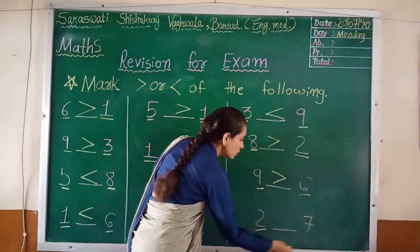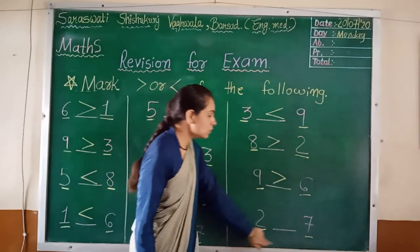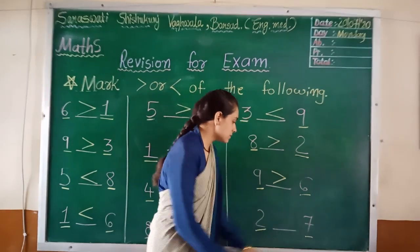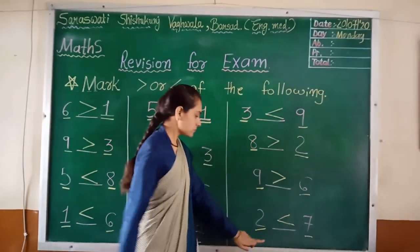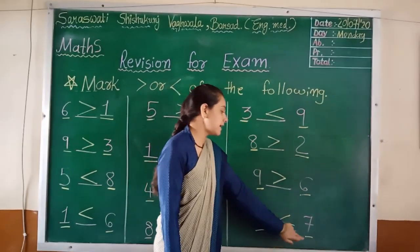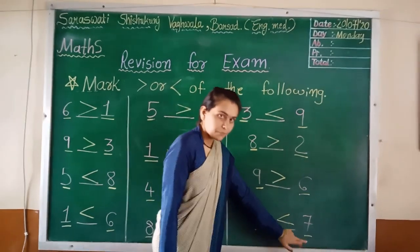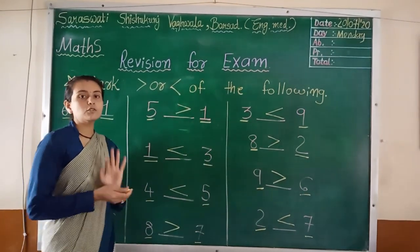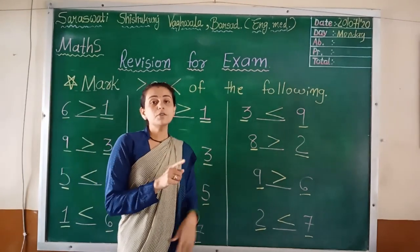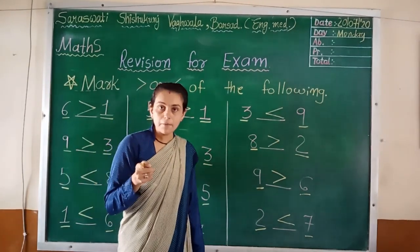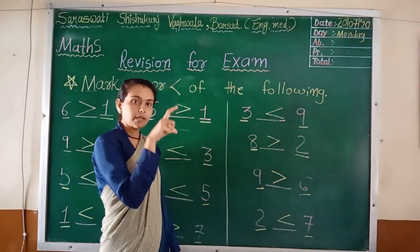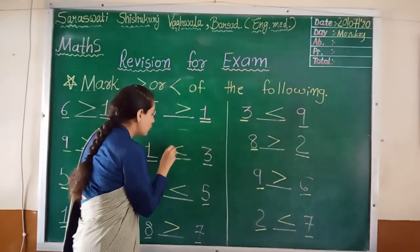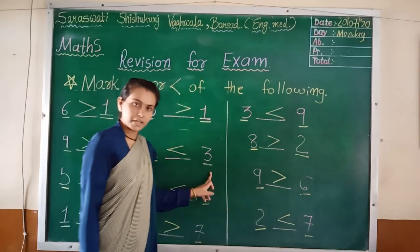And last, two and seven. Two and seven. Which is the bigger number? Seven. So, less than. Two is less than seven. Once you have to keep it in mind: first, you have to find out the bigger number and open mouth at bigger number.